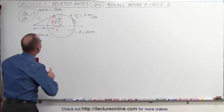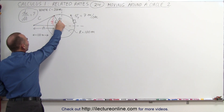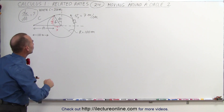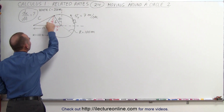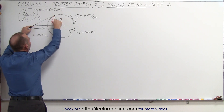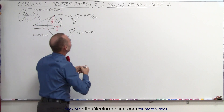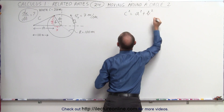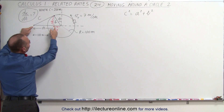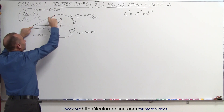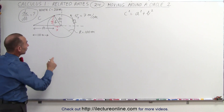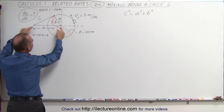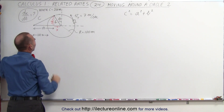We need to relate this to the rate of change of the angle, and we'll show how to do that in a moment. First, we want to relate c to a and b in this right triangle. We're creating this right triangle here, and we can say c² = a² + b². A is the horizontal distance, b is the vertical distance. We also have two other distances x and y: x added to a makes 200 meters, and y and b are the same distance.